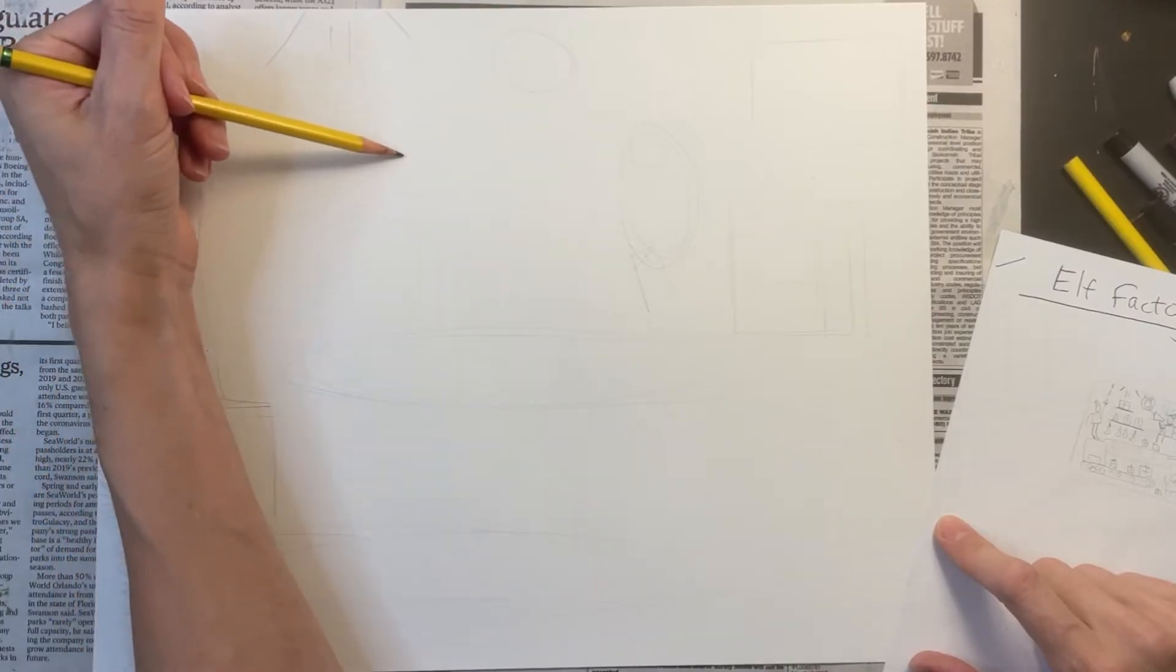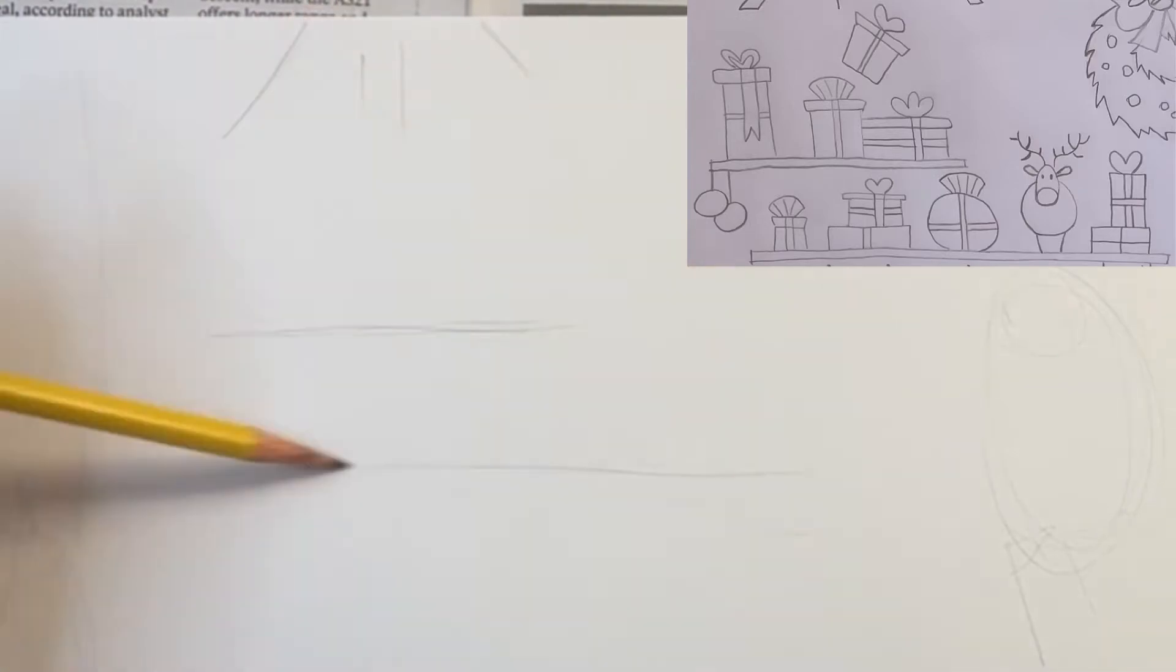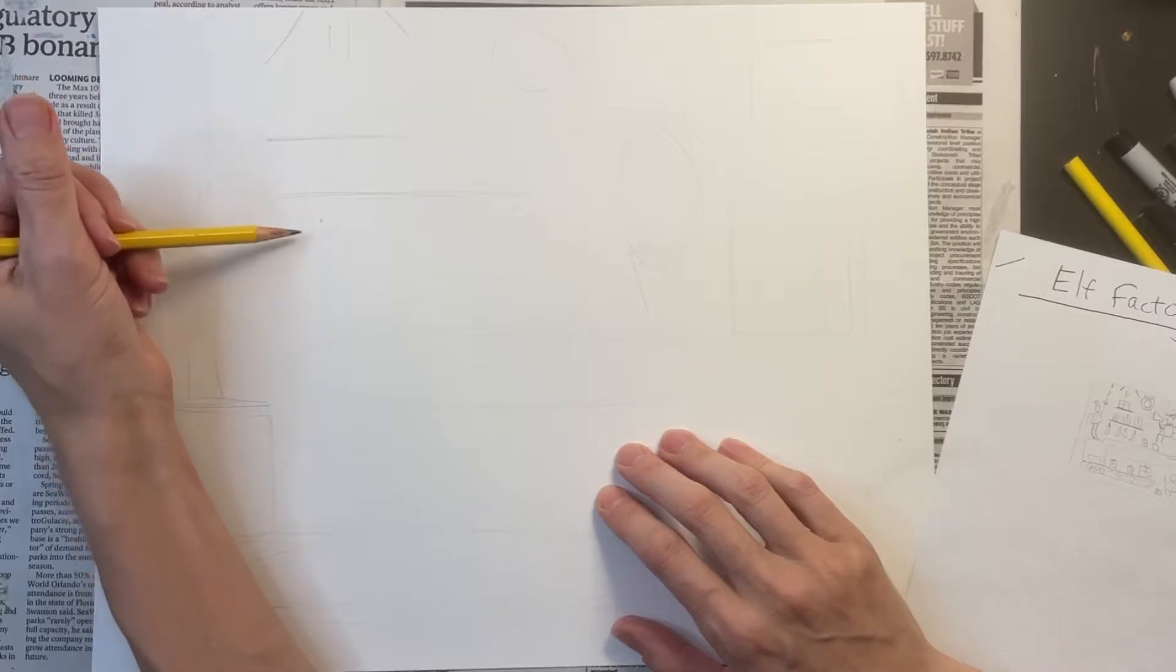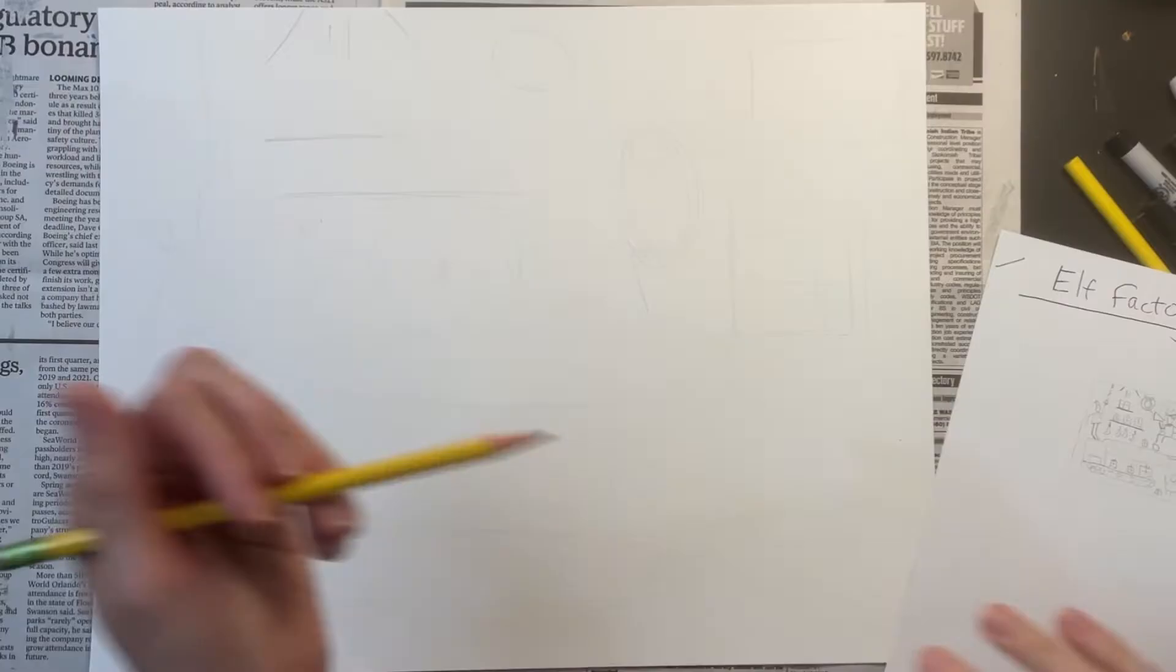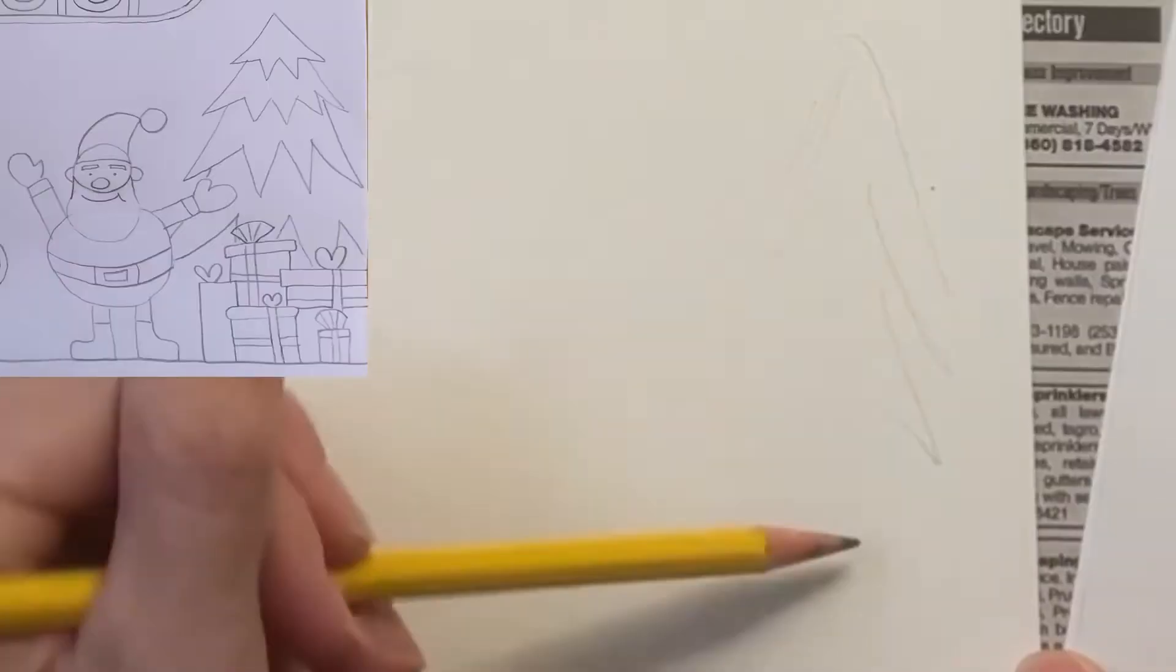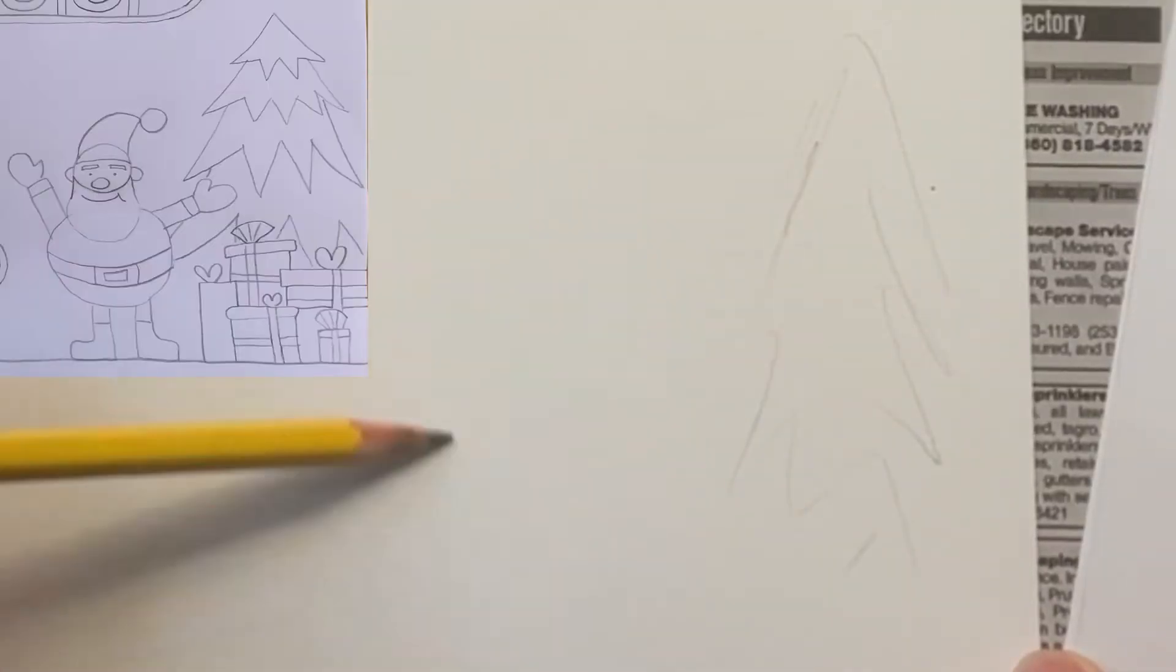Now I'm adding a couple floating shelves where presents will sit. Beneath the floating shelves, I'm adding some hanging Christmas stockings. In the bottom right hand corner, I'm adding a Christmas tree and drawing a stick figure with a big round belly. This is going to be Santa Claus.